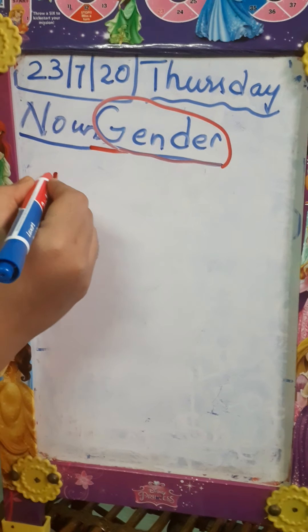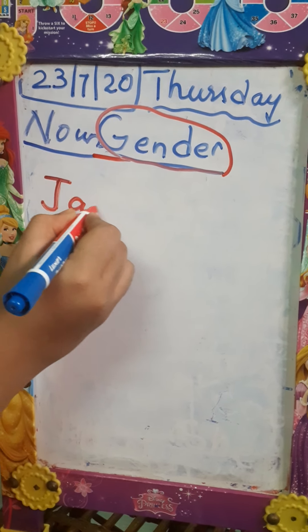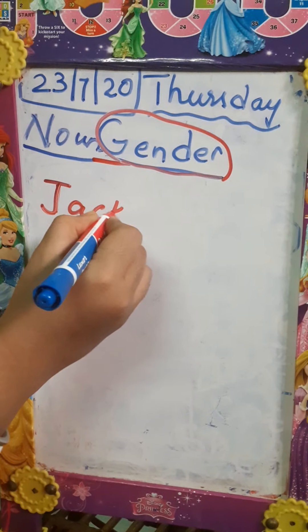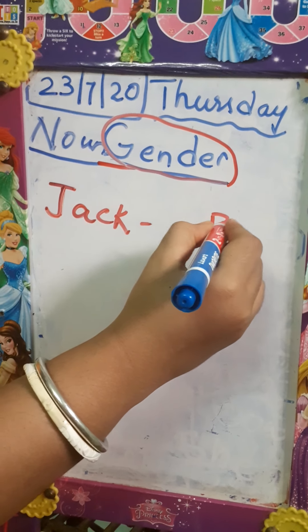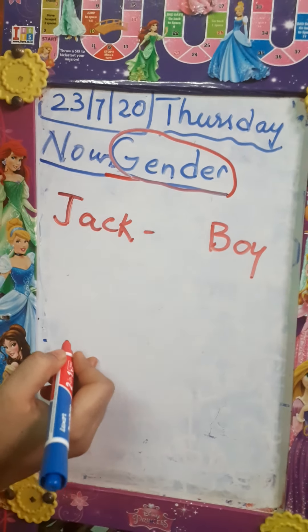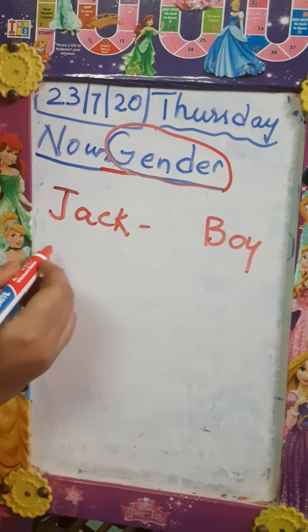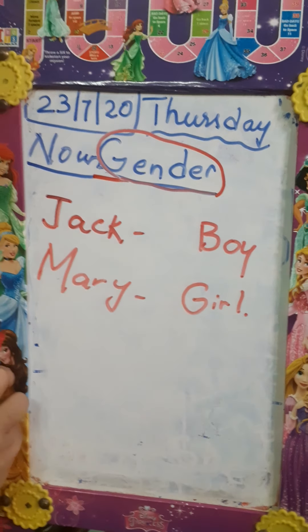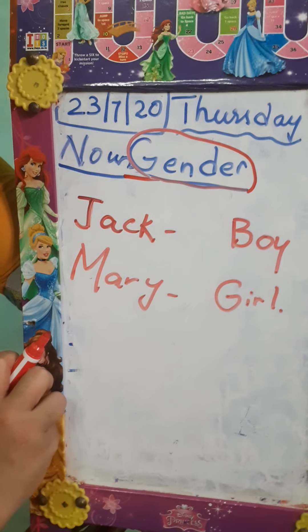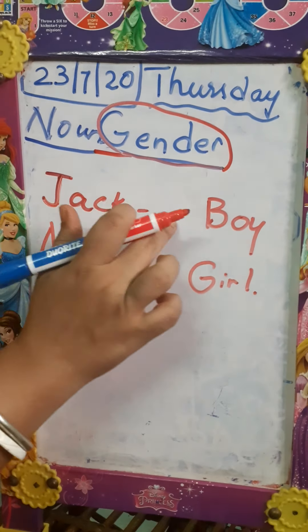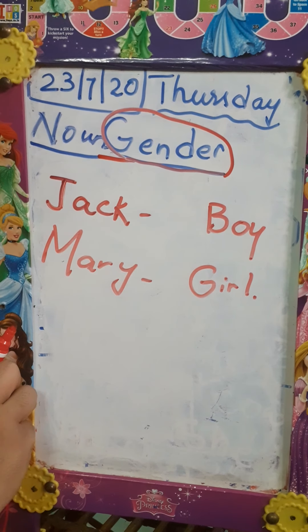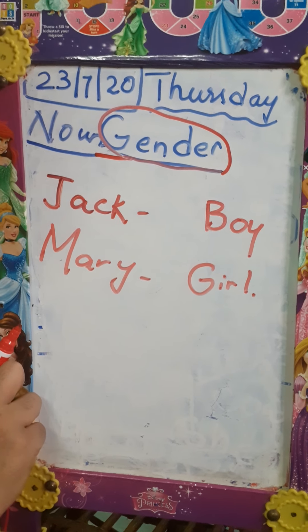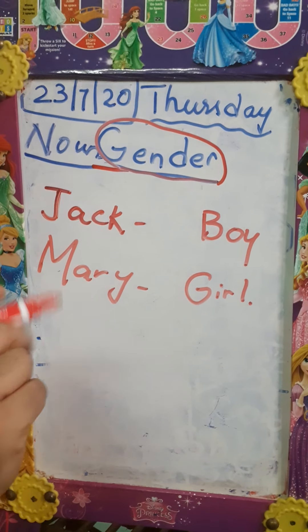Jack — boy. Mary — girl. So if I say, Jack is a good boy and she goes to school. Is it correct, children?